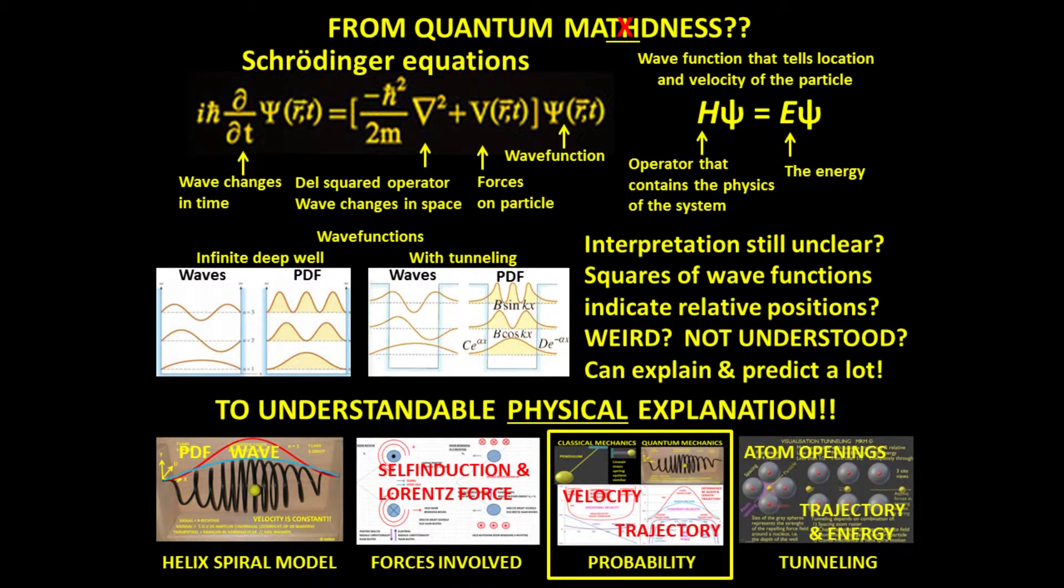In quantum mechanics, the velocity of a particle in the infinite well is constant. The PDF is then determined by the relative length of the helix-spiral trajectory.